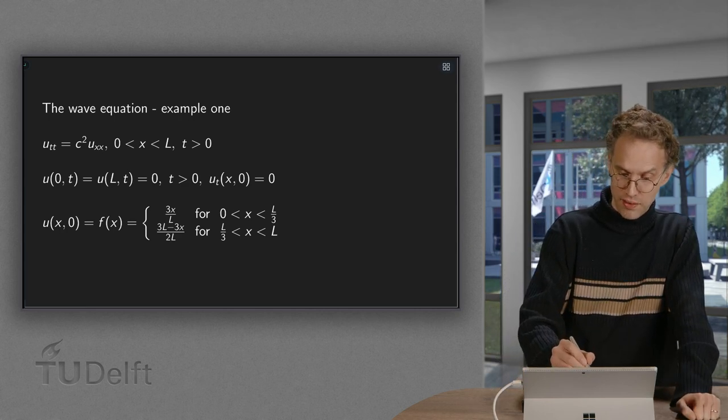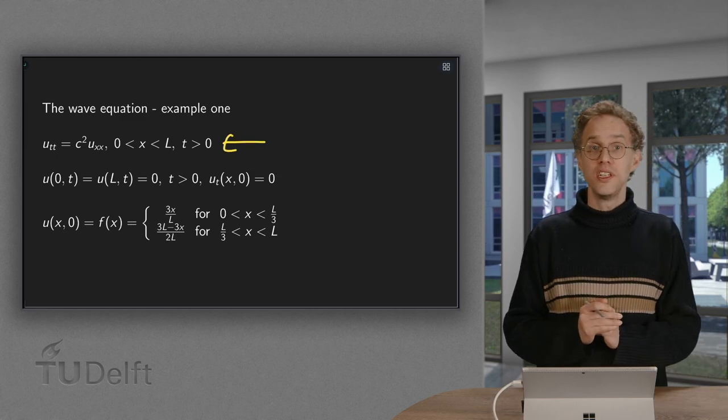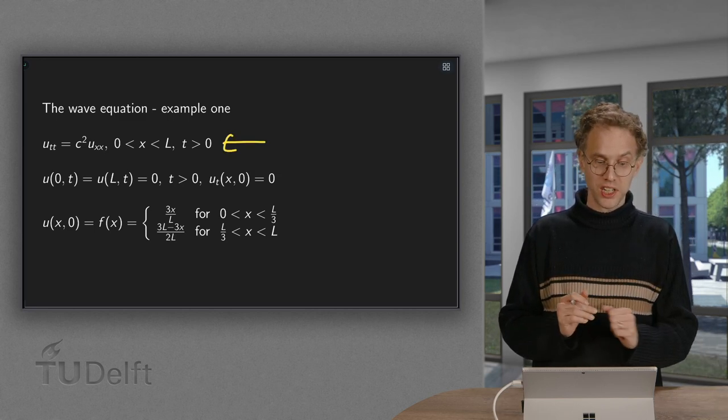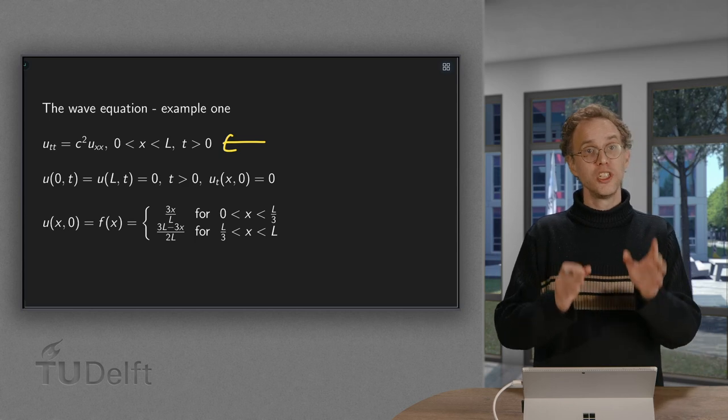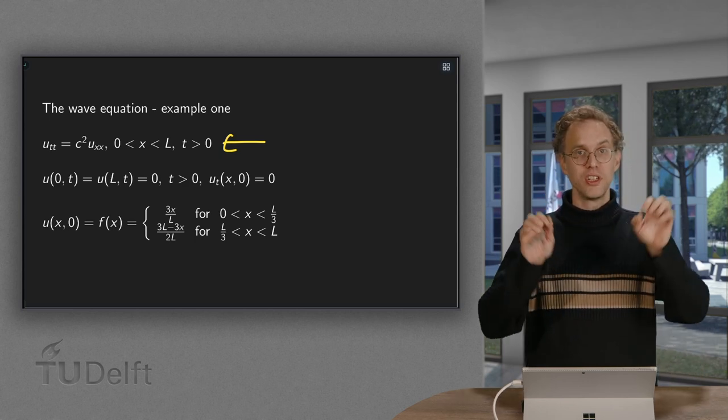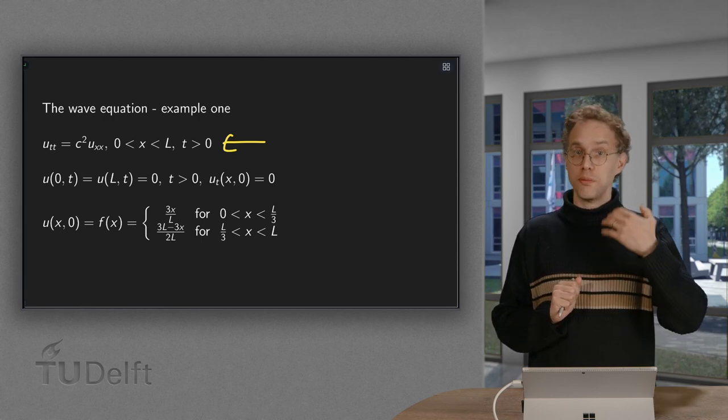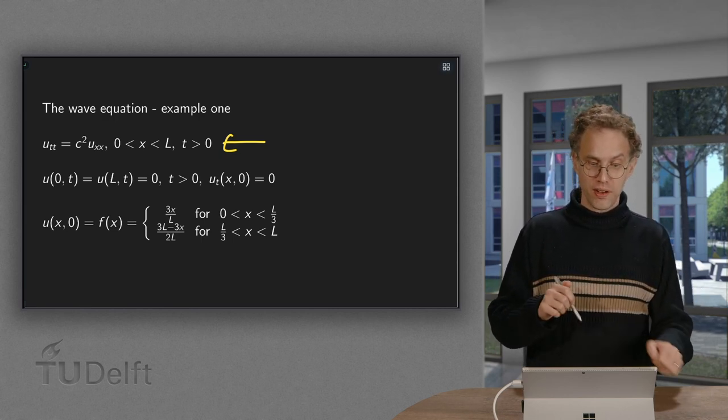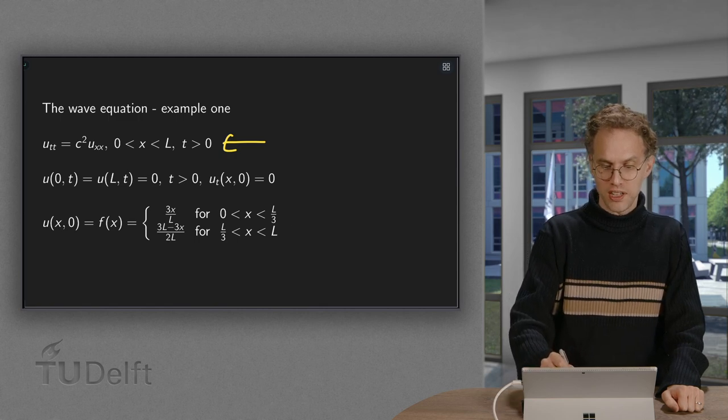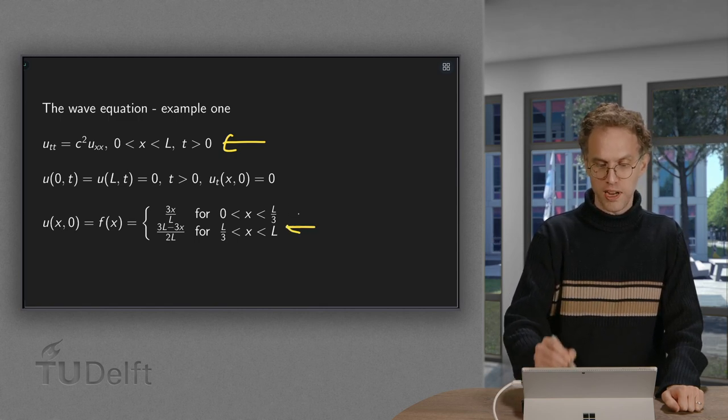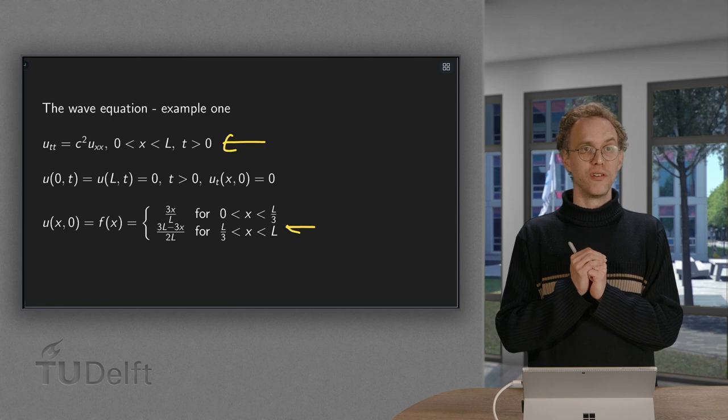So first of all, we have our PDE. Utt equals c squared times uxx. We have boundary conditions. We use Dirichlet boundary conditions fixing the string on both ends. And in this particular case, we have a seemingly complicated initial condition for the displacement and zero initial velocity.